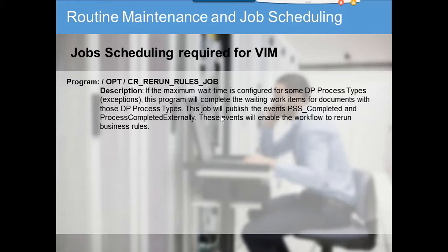This program applies if the maximum wait time is configured for some DP document types — it completes the waiting work items and publishes events 'PSS completed' and 'process.' This handles scenarios where a person has been given three days to enter a goods receipt for an invoice, and if they haven't done it, the process will escalate to their manager.